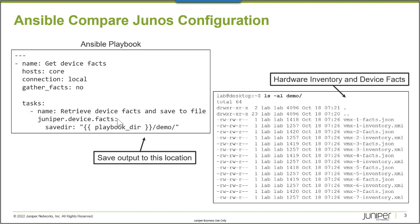To retrieve facts for these devices, I want the output saved to a local directory on my Ansible workstation — specifically the working directory that I'm running the Ansible playbook in. I created a demo folder. Please save all of the retrieved facts output there.